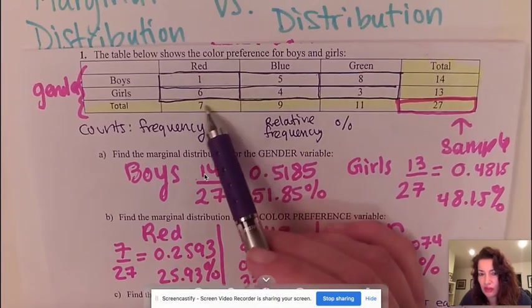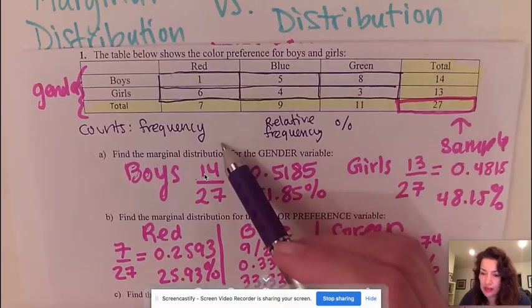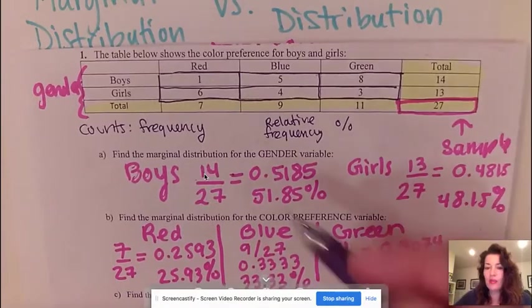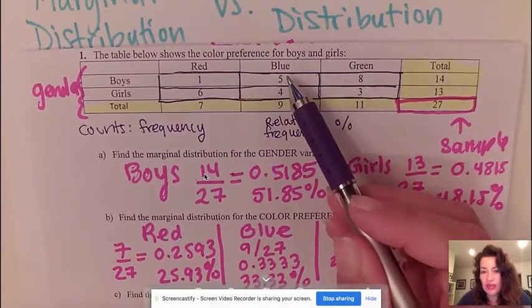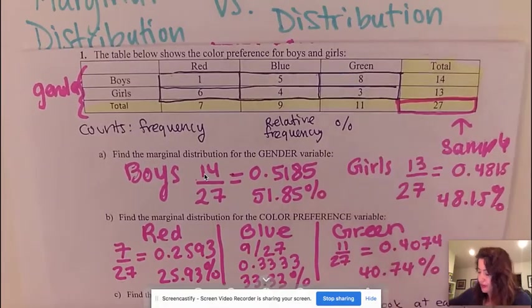So every cell looking downwards, because that is the color preference. I'm going to fill this out. So I'm going to say 1 out of its total, 7, 6 out of 7, and 1 out of 7 and 6 out of 7 is 7 out of 7, which makes sense. That's 100%. And then we're going to do the same thing for the rest. We're going to say 5 out of 9 and 4 out of 9, 8 out of 11 and 3 out of 11.